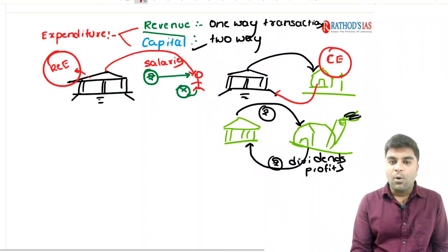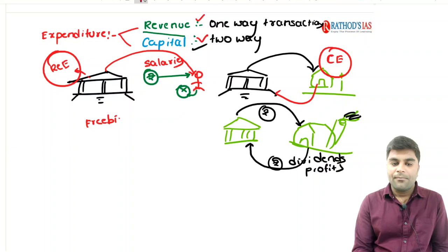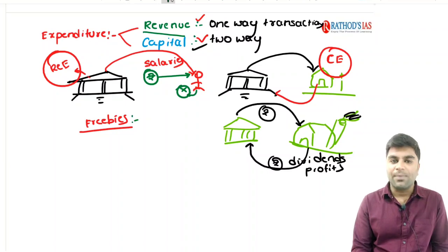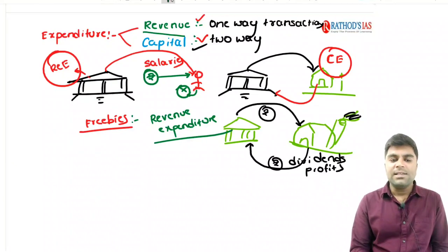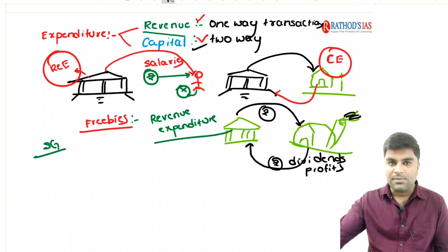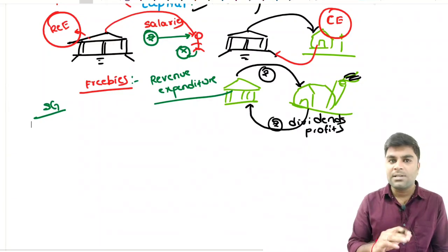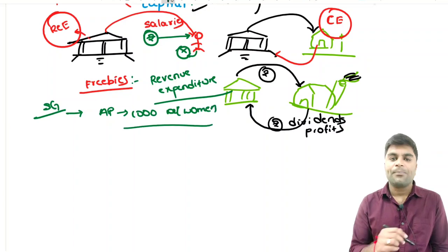Having understood the difference between revenue expenditure and capital expenditure, we now understand freebies. At most of the times, freebies are considered to be under revenue expenditure. Take the example of the Aam Aadmi Party's scheme of one thousand rupees per month for women — particularly in Punjab after they won elections, they wanted to give one thousand rupees per month per woman.